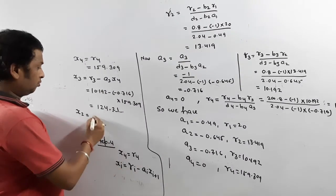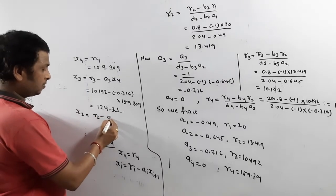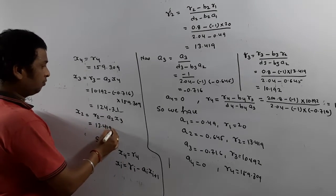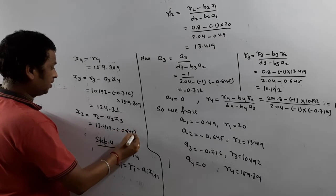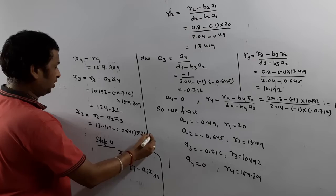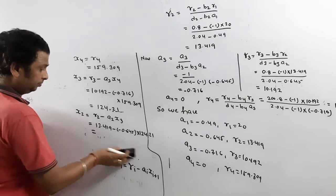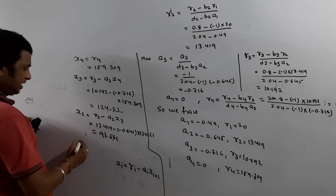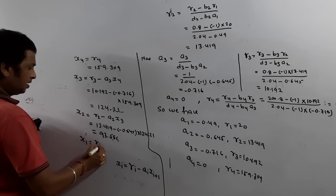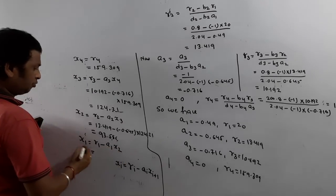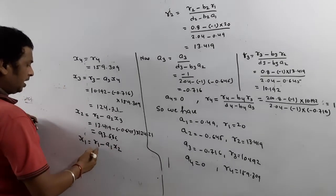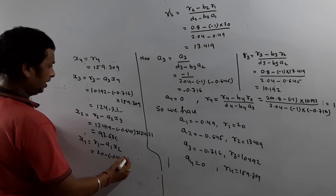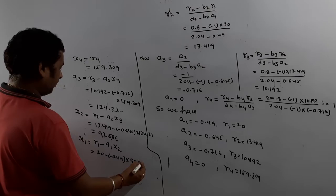Now X2: put i = 2, so X2 = R2 − A2 × X3. R2 = 13.419, A2 = −0.645, X3 = 124.21 (approximately). When you simplify, X2 ≈ 93.586. Please check. Now X1: X1 = R1 − A1 × X2. R1 = 20, A1 = −0.49, X2 ≈ 93.586. Calculate to get X1. Once you have X1, X2, X3, X4, the solution is complete.